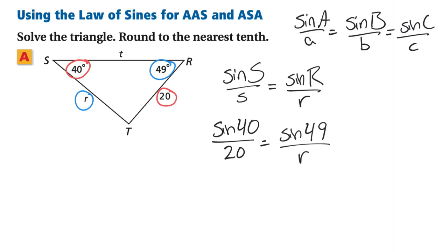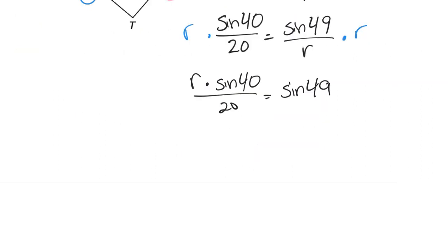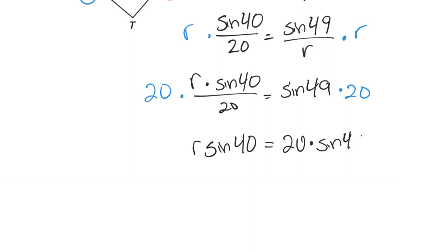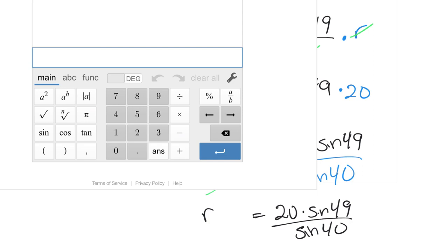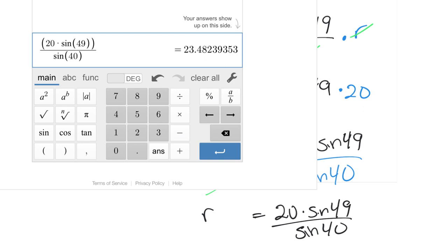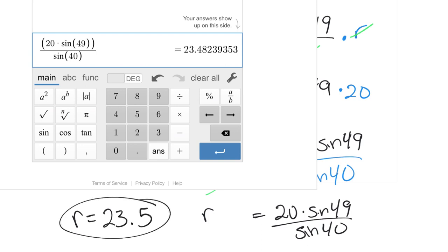I'm looking for side r, which is in the denominator, so I'll multiply both sides by r, leaving r times sine of 40 over 20 equals sine of 49. Then I multiply both sides by 20 to clear the denominator: r times sine of 40 equals 20 times sine of 49. Dividing both sides by sine of 40 gives r by itself. r equals 20 times sine of 49 divided by sine of 40. Putting this all into the calculator at once, side r is 23.5.